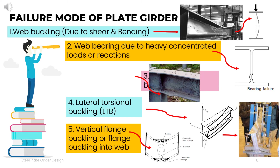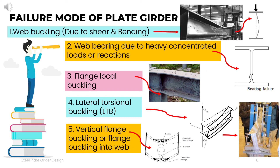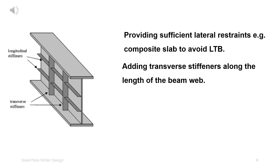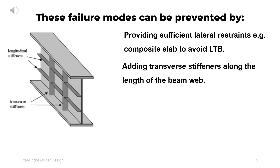Steel plate girders can undergo various failure modes. These include web buckling due to shear and bending, web buckling when subjected to heavy concentrated loads or reactions, flange local buckling, lateral torsional buckling, and vertical flange buckling or flange buckling into the web, or any combination of these stated failures.